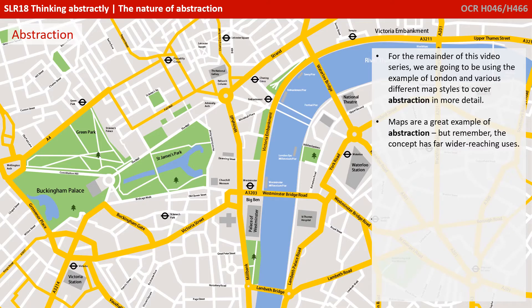For the remainder of these videos, we're going to be using an example of London and various different map styles to cover abstraction in more detail. Maps are a great example of abstraction, but remember, the concept has far wider-reaching uses.